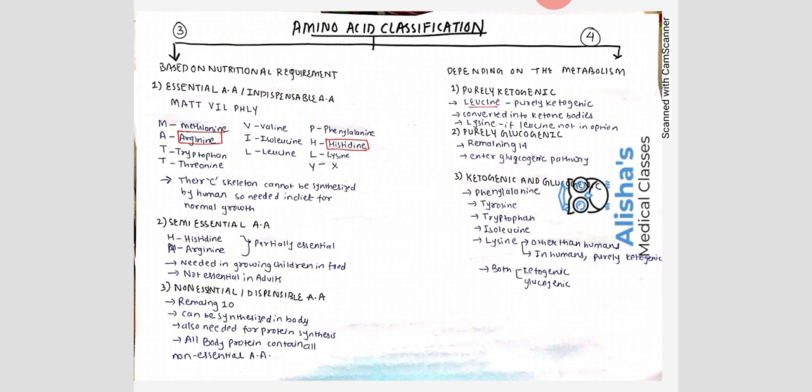The fourth classification is based on metabolism. If an amino acid is converted into ketone bodies, it is purely ketogenic. If it goes through the glucogenic pathway, it is purely glucogenic. If it undergoes both, it is both ketogenic and glucogenic. Purely ketogenic examples are leucine and lysine — in humans, both are purely ketogenic, though lysine in other animals is both.